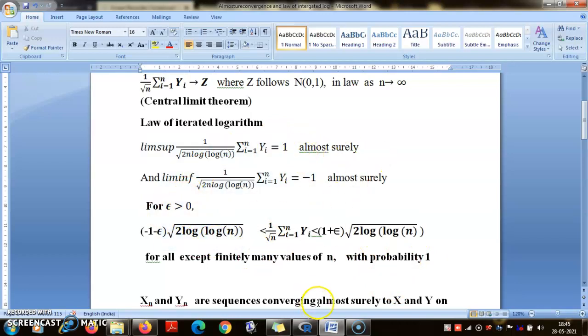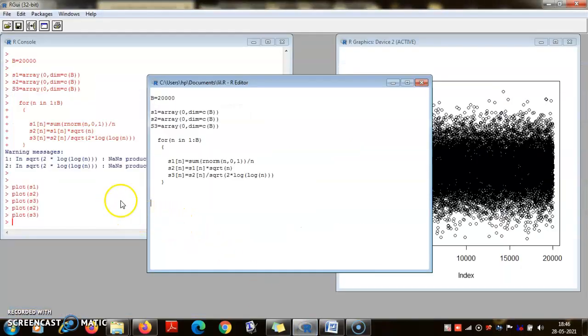These are random variables, not real sequences, so we have to make a probability statement. That is what it essentially means. 'Almost surely' means with probability one. So for any ε positive, the values of (1/√n) Σ Yi—if we take this thing to the right—will be between -(1+ε)√(log log n) and (1+ε)√(log log n). This essentially behaves like the bounds of some tail of the sequence. For all except finitely many values of n, (1/√n) Σ Yi will be between these bounds with probability one.